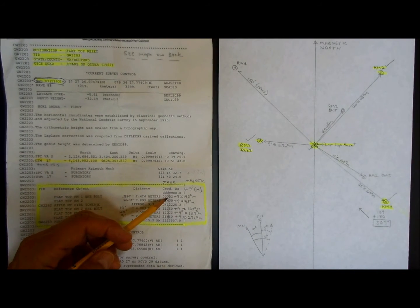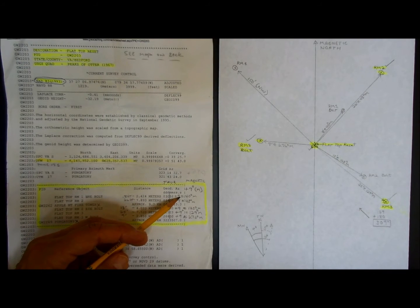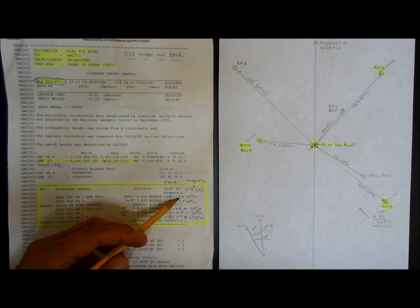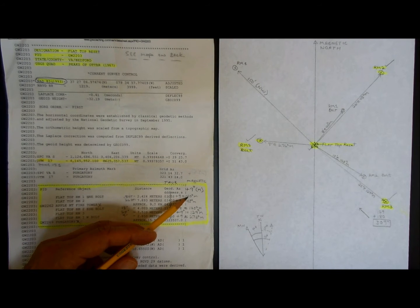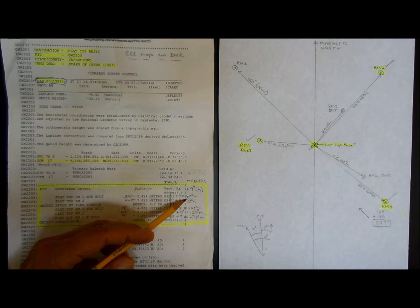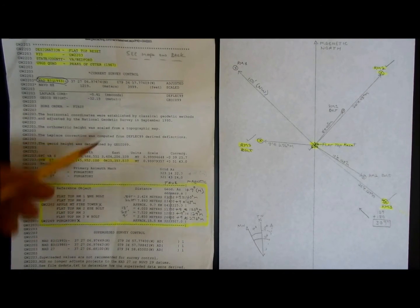This is almost 31 degrees plus 9 degrees declination, which is 40 degrees magnetic. And that's for RM1 north-northeast bolt.